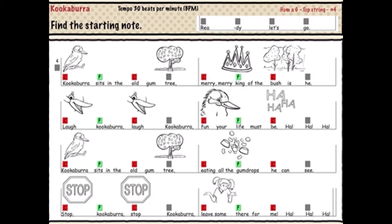Three, two, one, go. Kookaburra sits in the old gum tree. Merry, merry, king of the bush is he.